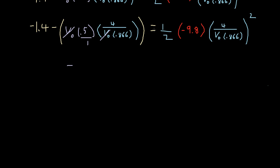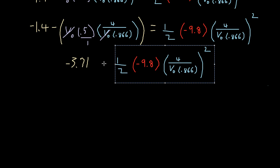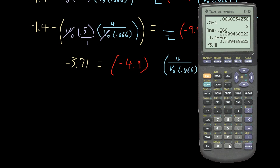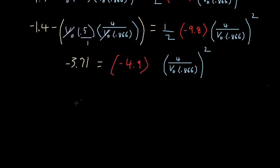Negative 3.71. That's simplified a lot. Now we just take this down and make an equal sign out of it. This simplifies into negative 4.9, since 1 half times negative 9.8 is negative 4.9. So we write that there. Now we divide each side by negative 4.9. Negative 3.71 divided by negative 4.9 is equal to 0.757. So we get 0.757 is equal to all of this squared.